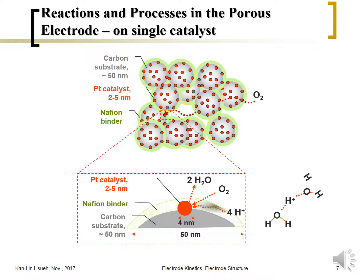The platinum particle is about 2 to 5 nanometers in size. For a particle this size, you have more than 50 platinum atoms, so the crystal structure of the platinum catalyst will also importantly affect the oxygen reduction reaction mechanism. The next slide looks in more detail at the atomic-level structure of the platinum catalyst.